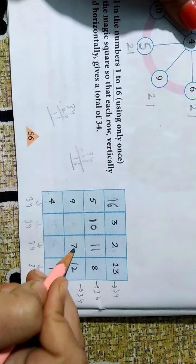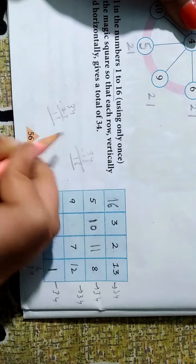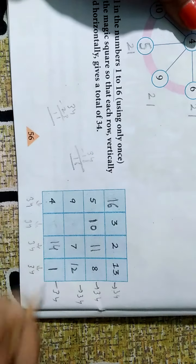Ab yeh one, two, three. Yeh missing hai. To eleven plus seven is eighteen, nineteen, twenty. Kitna hoga missing? Thirty-four minus twenty? Fourteen. Clear?